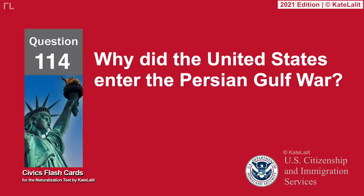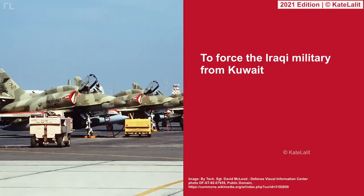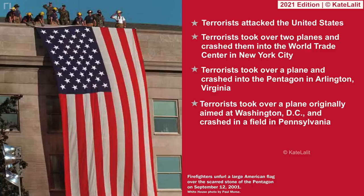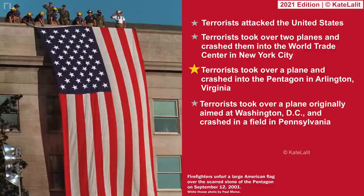Why did the United States enter the Persian Gulf War? To force the Iraqi military from Kuwait. What major event happened on September 11, 2001 in the United States? Terrorists attacked the United States. Terrorists took over two planes and crashed them into the World Trade Center in New York City. Terrorists took over a plane and crashed into the Pentagon in Arlington, Virginia. Terrorists took over a plane originally aimed at Washington, D.C. and crashed in a field in Pennsylvania.